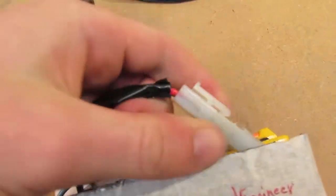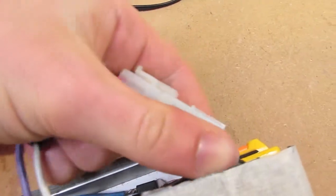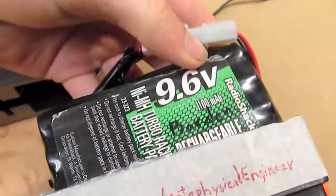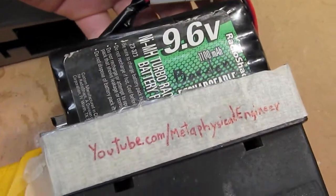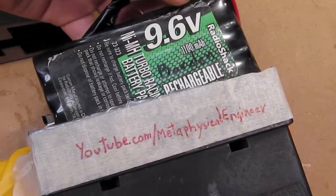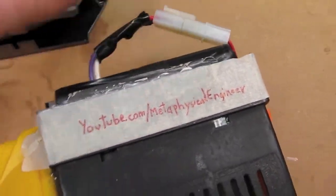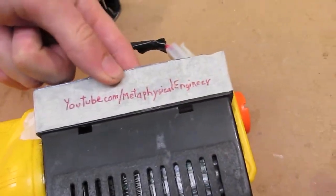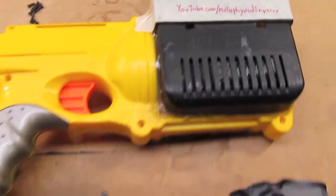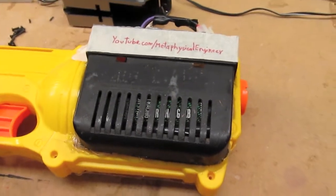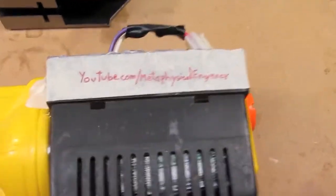The power source it's running off of is a 9.6 volt nickel metal hydride rechargeable battery made by Radio Shack. Got it with a hand-me-down RC car a while ago and the car was several years old before that, so it's probably a 10 year old battery. Still works pretty well.